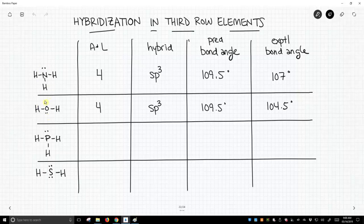The A plus L value, attached atoms plus lone pairs, for both of these molecules is 4. That leads us to predict the hybridization of sp3, and we predict a bond angle of 109.5 degrees. And the experimental bond angles for these two structures match up pretty closely with 109.5. Ammonia is 107, and water is 104.5 degrees.